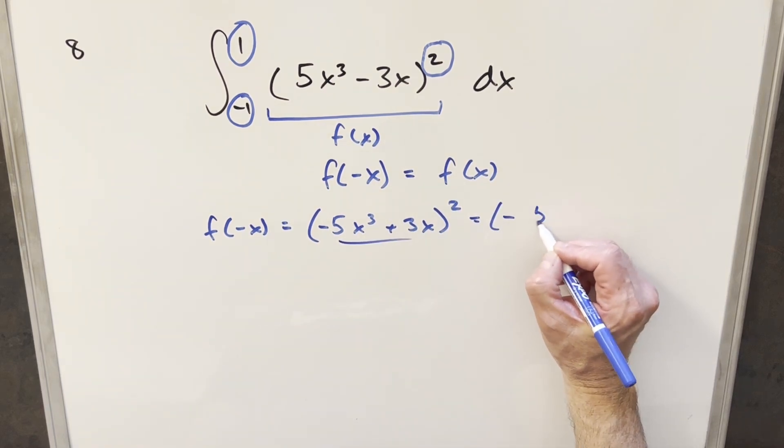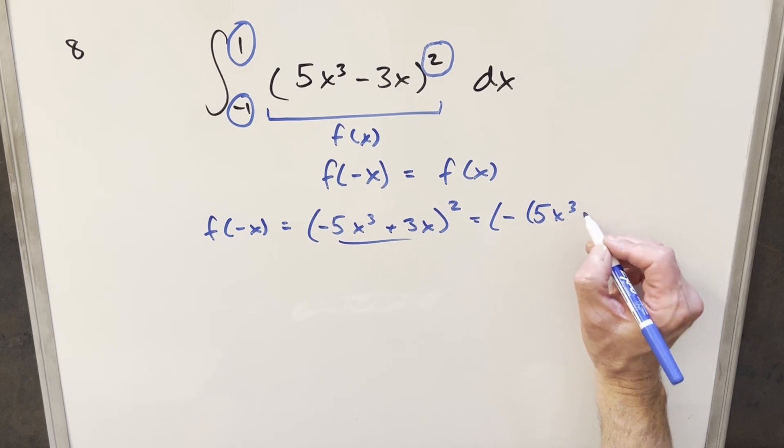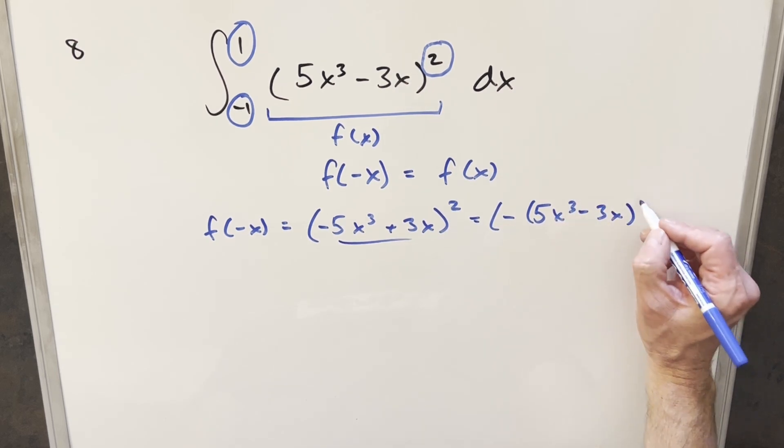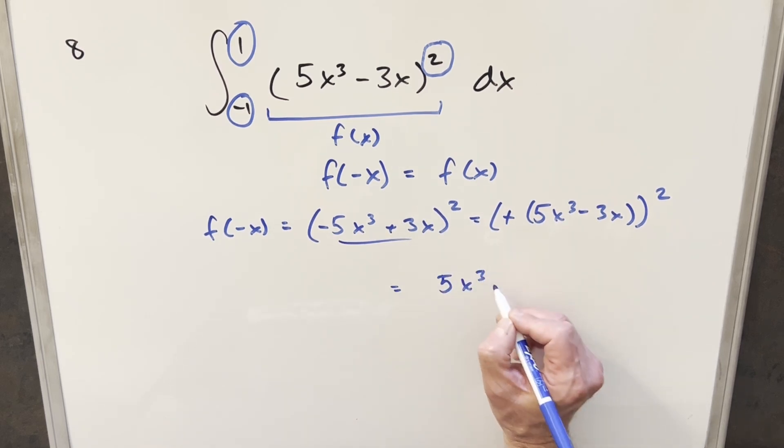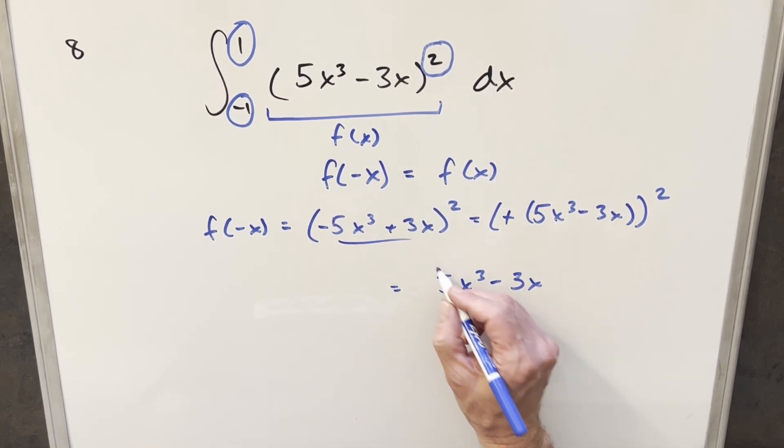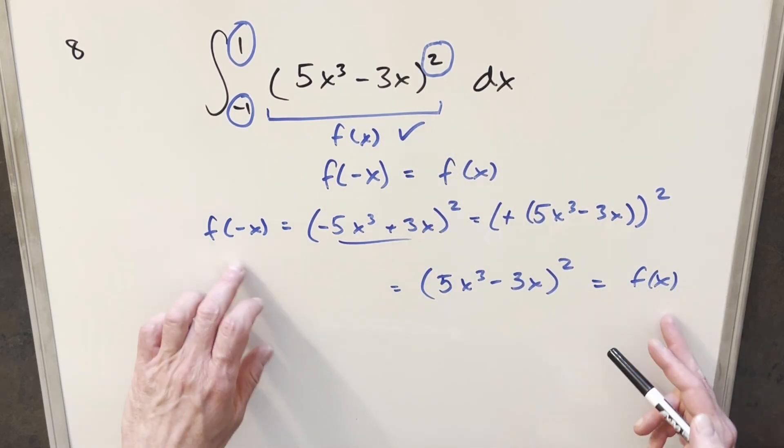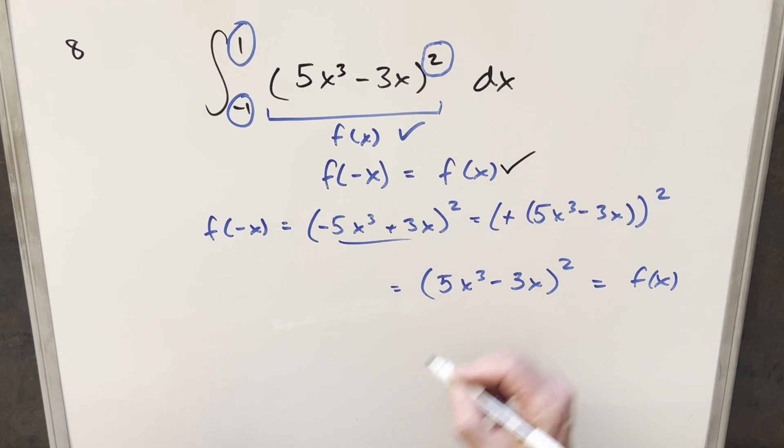But then what I can do is factor a minus out of this. So I can write this as minus 5x cubed minus 3x all squared. But when you do that, this minus is just going to go away and become a plus. And we get back 5x cubed minus 3x all squared. This is actually the same as this, our f of x. So doing this, we show that this is an even function, so we can use the principle of even functions.